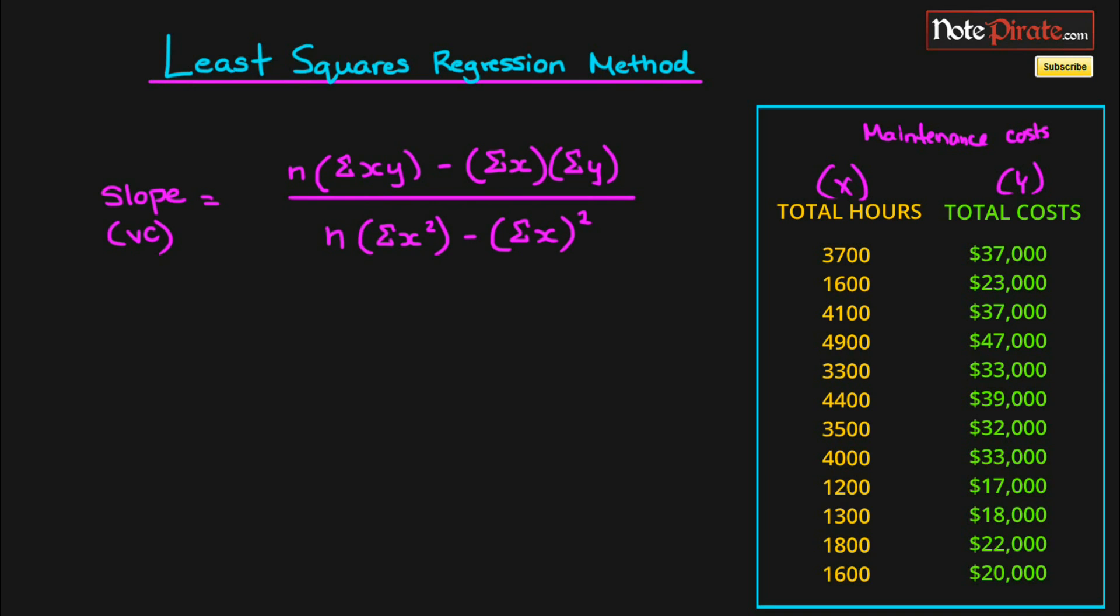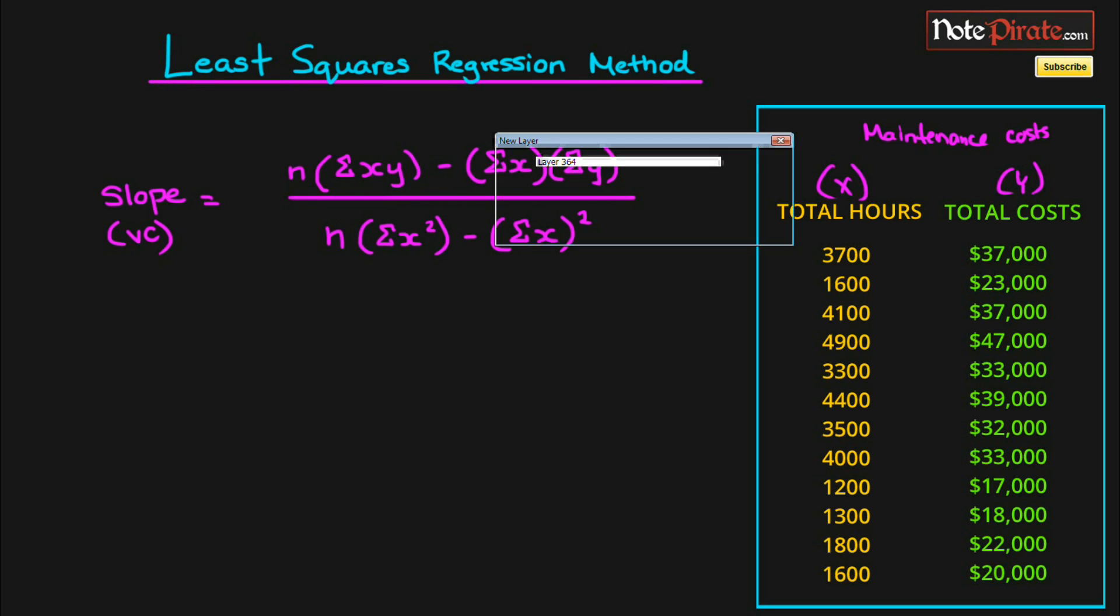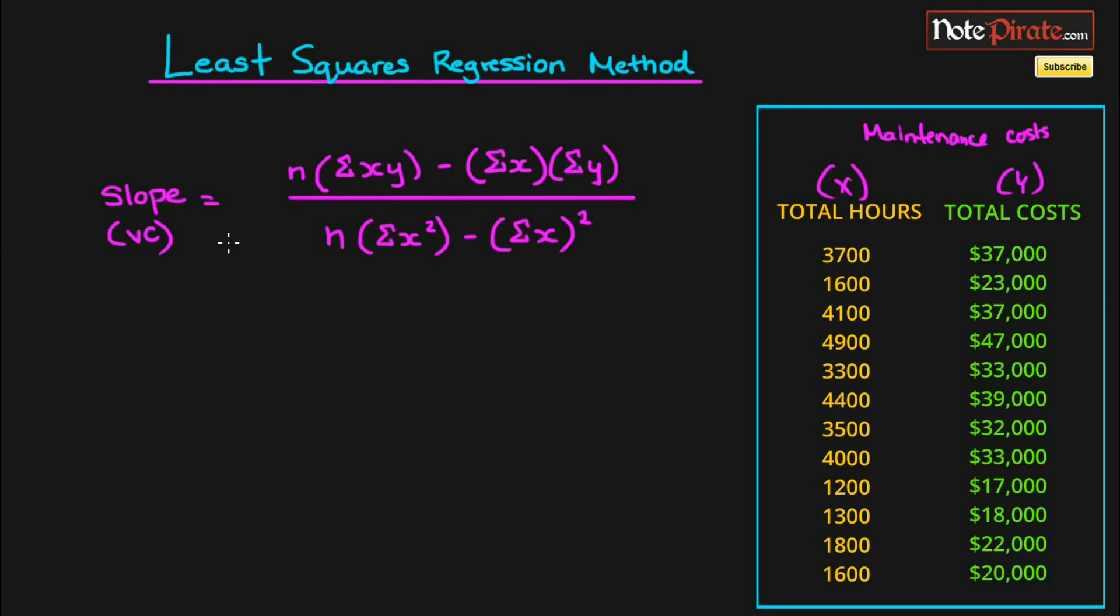We have this equation here that calculates our slope or variable costs. n stands for the number of data points we have, so 1, 2, 3, 4, 5, 6, 7, 8, 9, 10, 11, 12 - we got 12. Each x and y is one data point when you graph it, so there's only 12 data statistics.